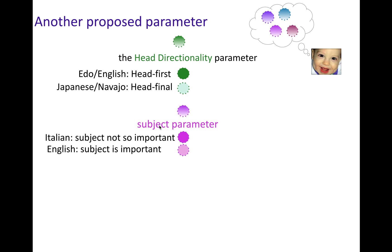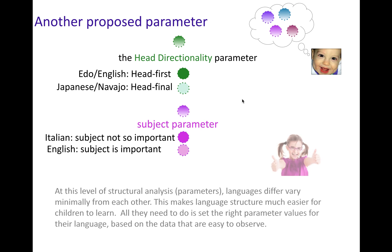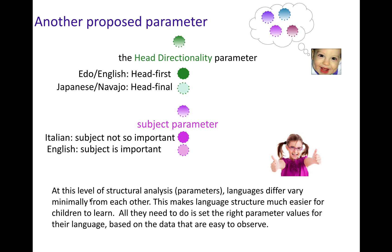If we combine that with another parameter having to do with the subject — where in Italian the subject isn't as important and in English the subject is more important — now you have these two little switches, these two little parameters that you can flip, and get a whole bunch of different behavior, explaining a whole bunch of different patterns you expect or don't expect to see in a language. At this level of structural analysis, languages don't differ that much from each other — it's just one value or the other of each parameter. This makes language structure much easier to learn, because all you need to do is figure out the right value for that parameter based on data that are pretty easy to observe.